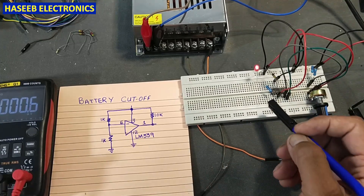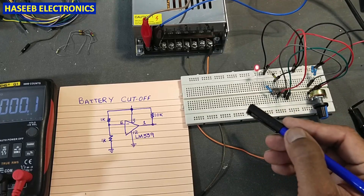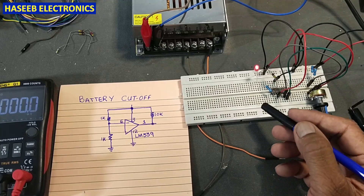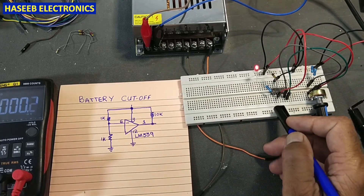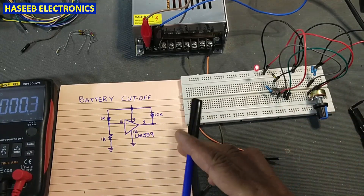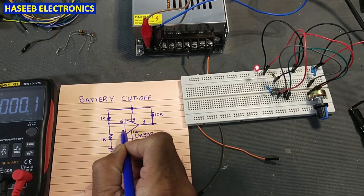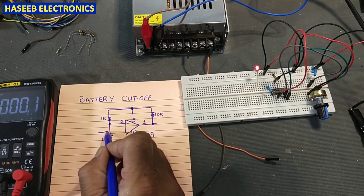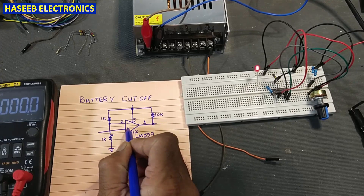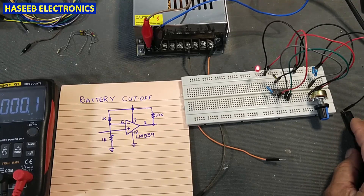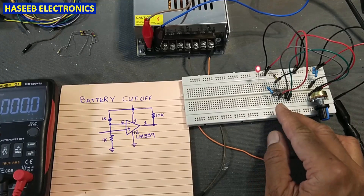The non-inverting comparator is a combination of ICs — LM139, LM239, LM339 — any comparator which can decide based on the difference in the inputs. We have two inputs: one is called the inverting input and the second is called the non-inverting input.